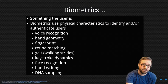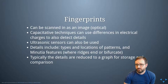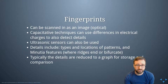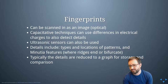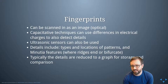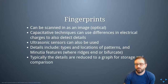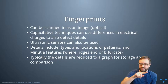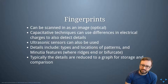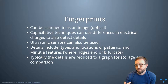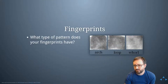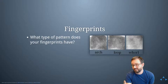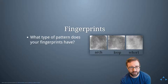All of these are examples of something that the user 'is' in terms of authentication factors. For fingerprints, you can scan them using an optical fingerprint reader, capacitive techniques using differences in electrical charges, or ultrasonic sensors. The details you're looking for are the types and locations of patterns and minutiae features where ridges end or bifurcate. These details are typically reduced to a graph for storage and comparison. Looking at your own fingerprint, you'll be one of three general types.